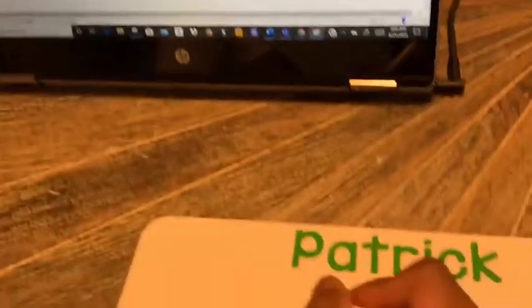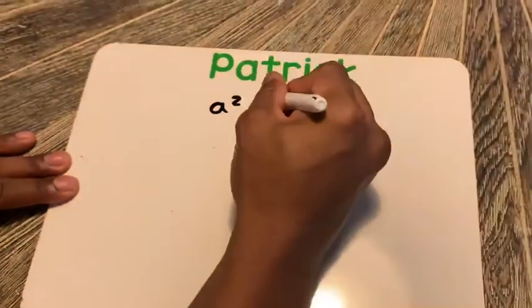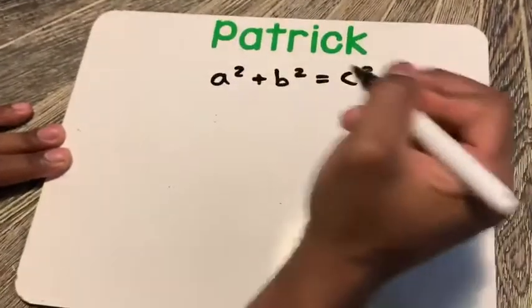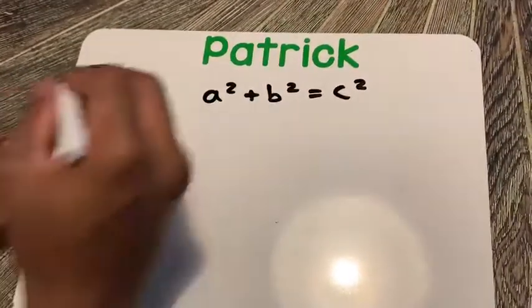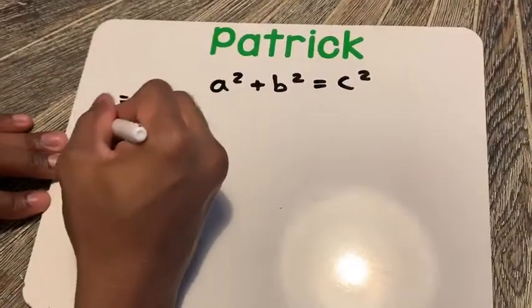So once again, we write the Pythagorean theorem. You all should be good with that. A squared plus B squared equals C squared. And then we have to identify our values like we always do.